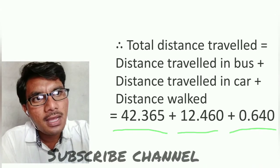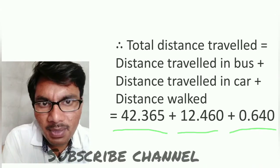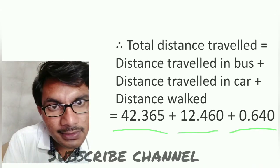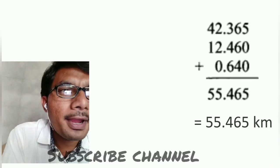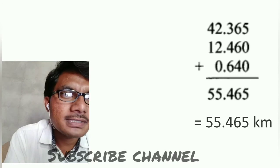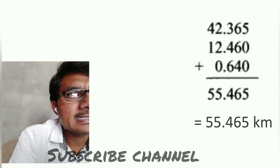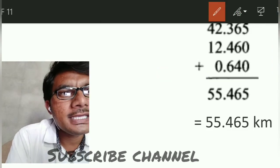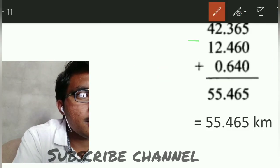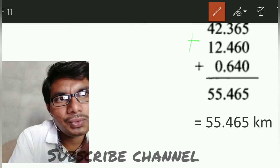Let's arrange this vertically: 42.365 plus 12.460 plus 0.640. Three quantities, so two addition signs.